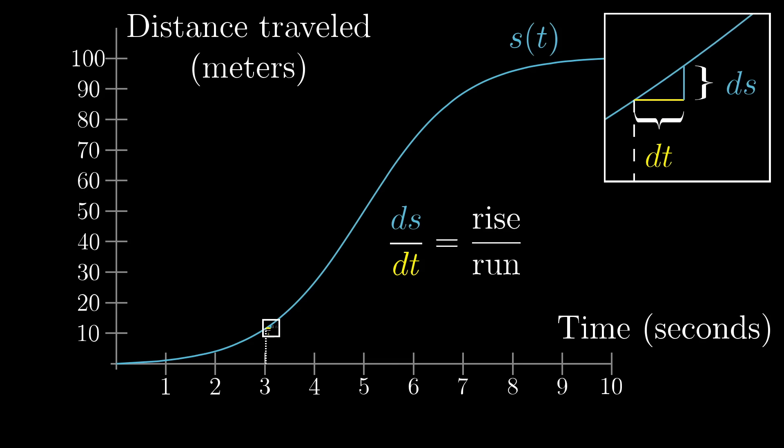Of course, there's nothing special about the value t equals 3. We could apply this to any other point in time. So we consider this expression, ds over dt, to be a function of t. Something where I can give you a time t, and you can give me back the value of this ratio at that time: the velocity as a function of time. So for example, when I had the computer draw this bump curve here, the one representing the velocity function, here's what I had the computer actually do.